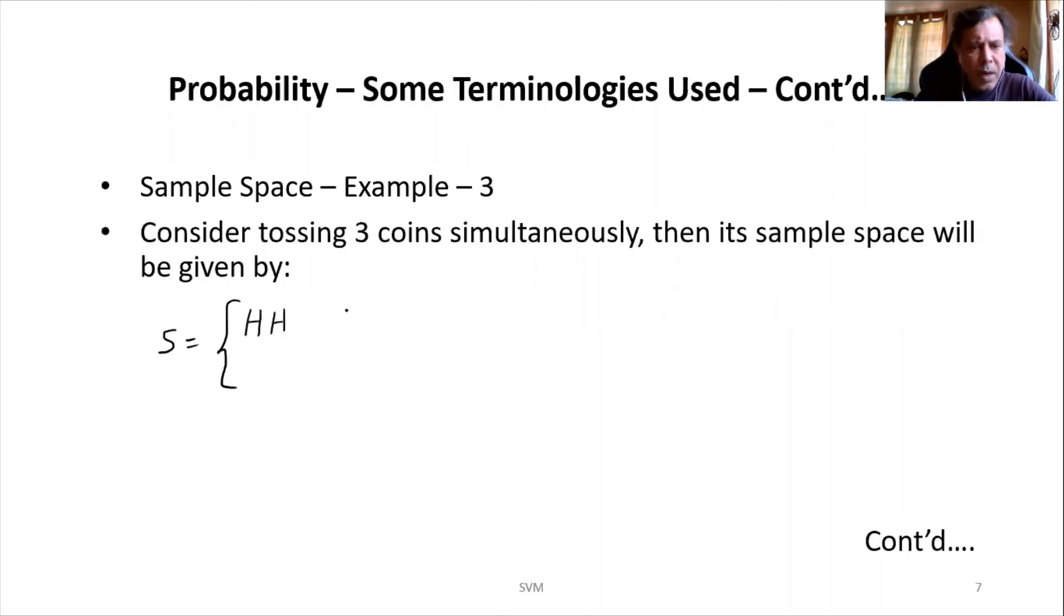HH, I won't put a comma now. I'll just give some space. Then I will write the second one, which is HT. Then the third one, TH, and then the fourth one, TT. Let me repeat this in the second row also. HH, HT, TH, TT.